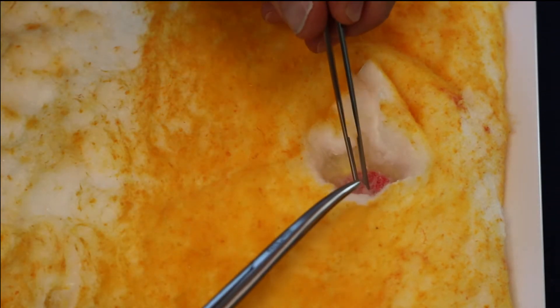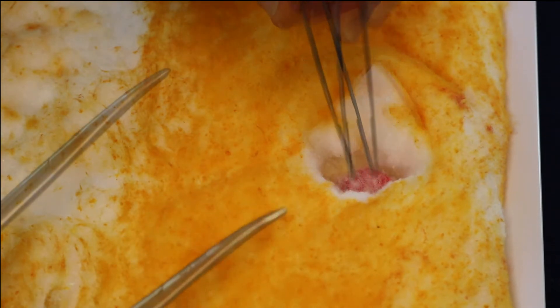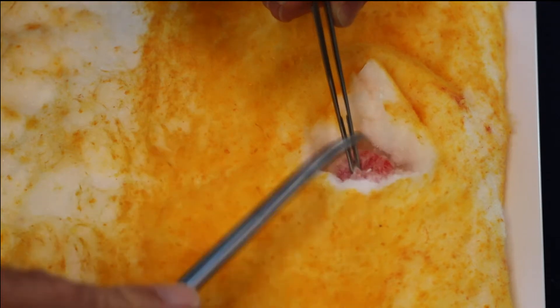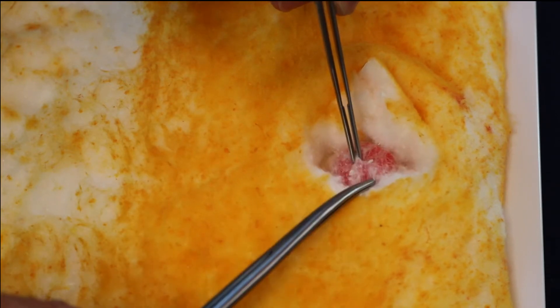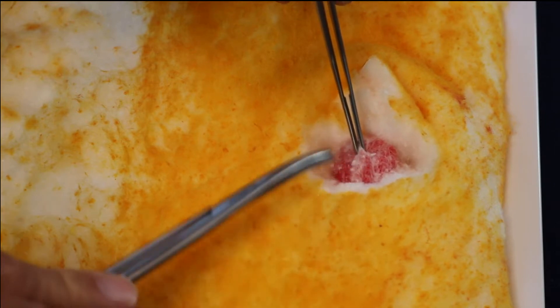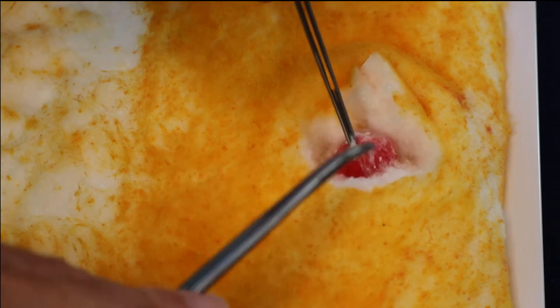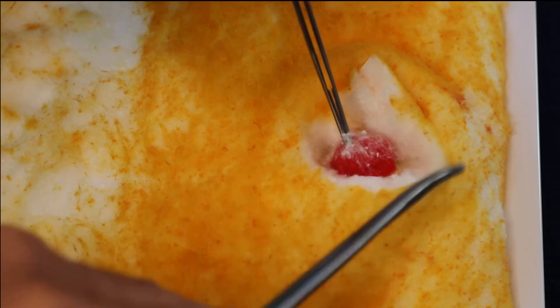This will require a combination of cutting and spreading. Going around the other side will require that you grasp the mass with your forceps and retract up and away from the surrounding tissues. Again, using your scissors with cutting or tissue separation motions will develop a plane between the mass and the surrounding material.